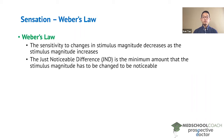Going back to the first statement, if you have a stimulus that has a low magnitude, then the JND is going to be small. But if you have a stimulus that has a large magnitude, then the JND is going to be large.